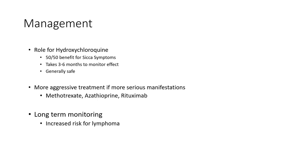For more serious manifestations involving organ involvement, there are other medications used, such as methotrexate, azathioprine, and rituximab. These are in a class of medications called disease-modifying anti-rheumatic drugs, and more information on those is available in other videos on our website.